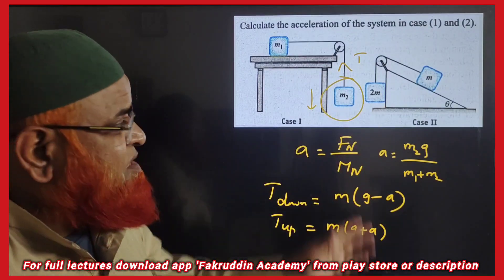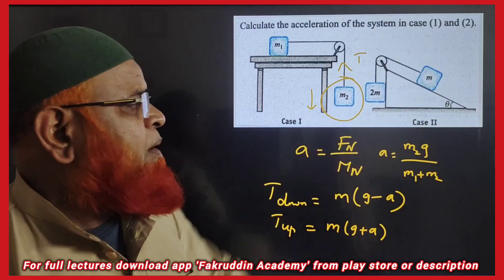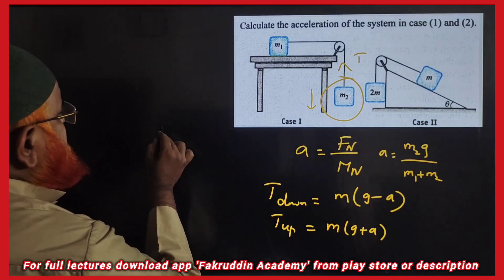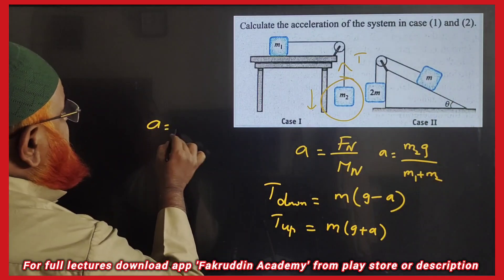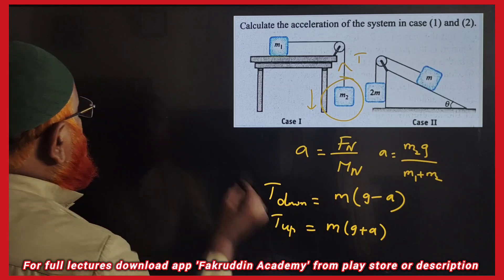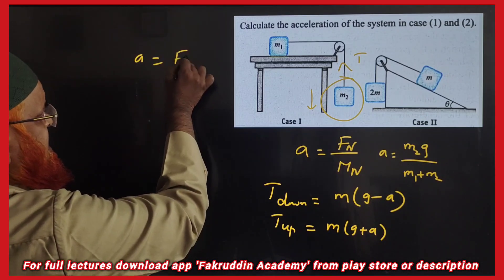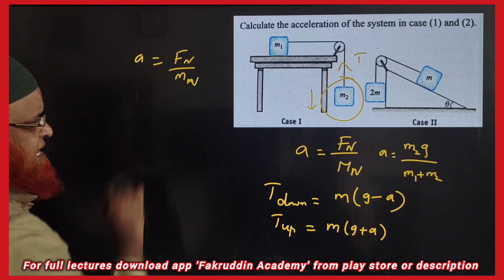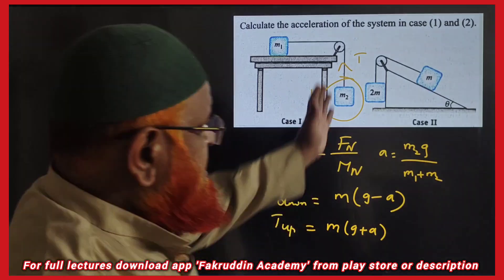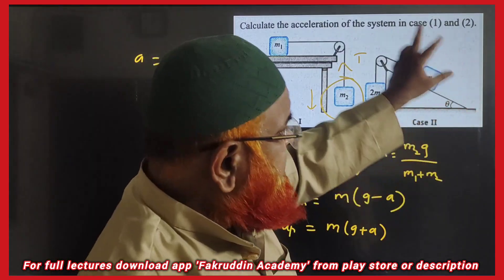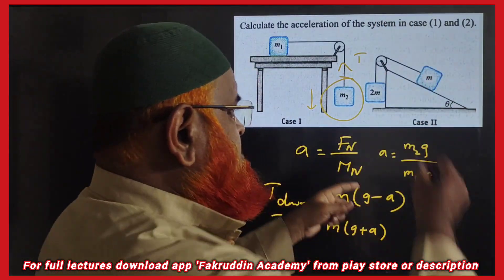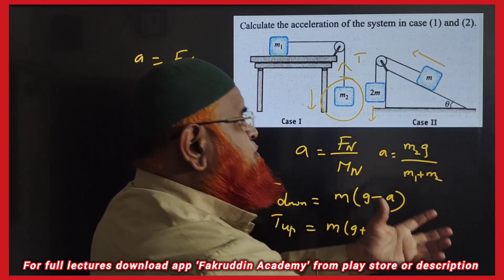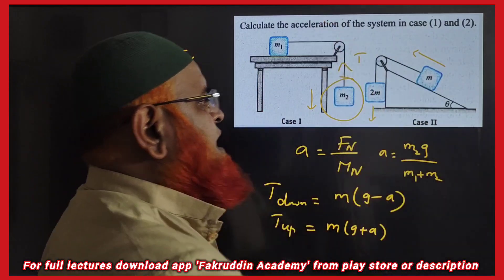What about the second system which has an inclined plane? How are you going to find the acceleration? Here also the same logic applies: acceleration is net force divided by net mass. Since it is an inclined plane, the net force is because of both masses. As one mass comes downwards, the other rises upwards along the inclined plane.